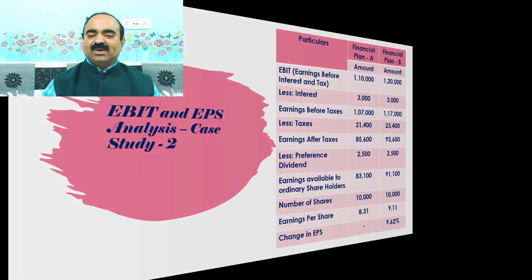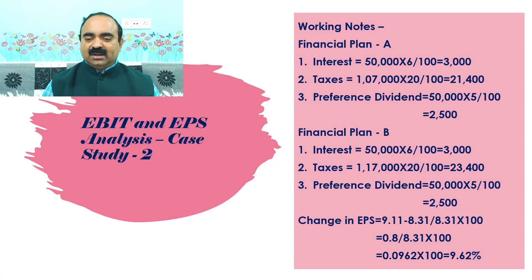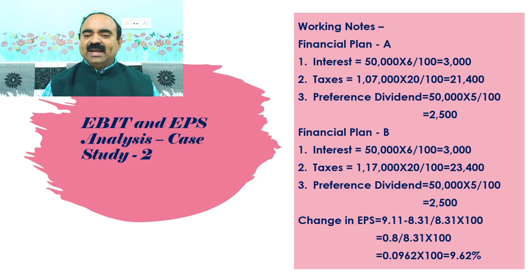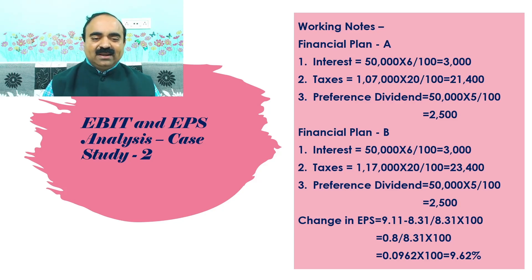This calculation was shown under working notes. Change in EPS is equal to (9.11 minus 8.31) by 8.31 into 100, that is equal to 0.8 by 8.31 into 100, that is equal to 0.0962 into 100, that is equal to 9.62%. In this video, I had dealt with Case Study 2 under EBIT and EPS Analysis. Thank you.